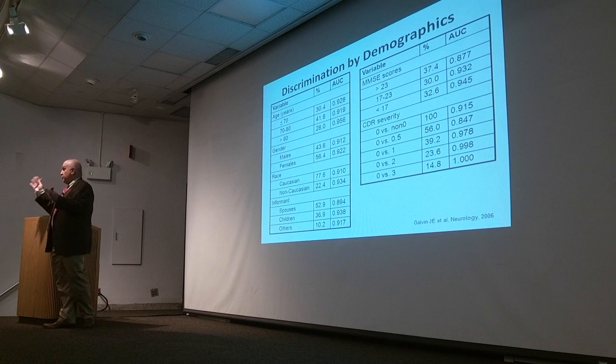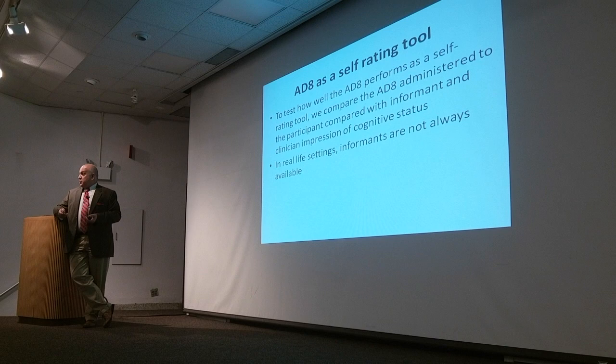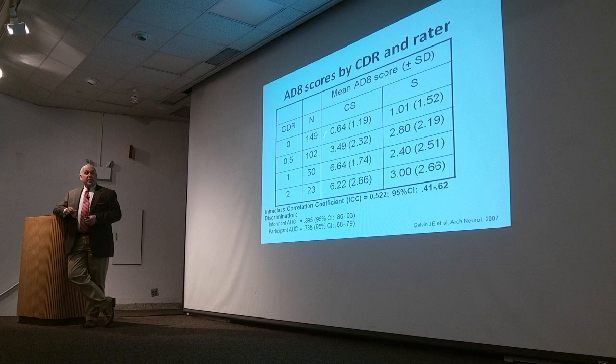It takes about two minutes to do — very brief, easy to fill out. When we published this, a reviewer asked: what happens if there's no informant around — does the patient rate themselves? We decided to test it as a self-administered tool. People who were not demented rated themselves about one, the same as their informants. People with even the mildest impairment were rating themselves about three, which is also what the informants rated them. So it did a really good job of discriminating.